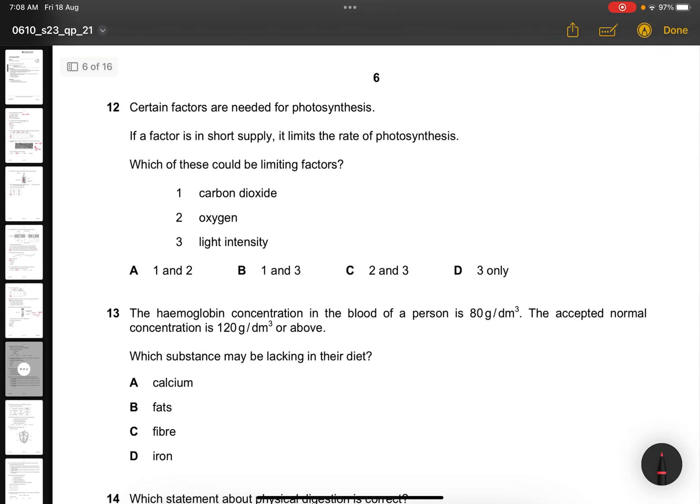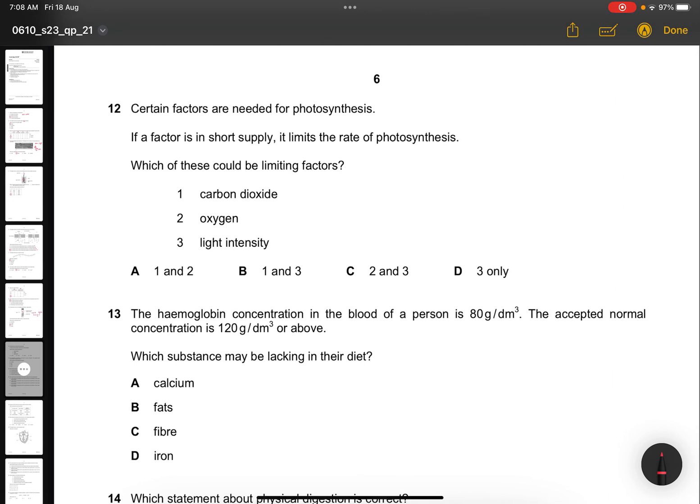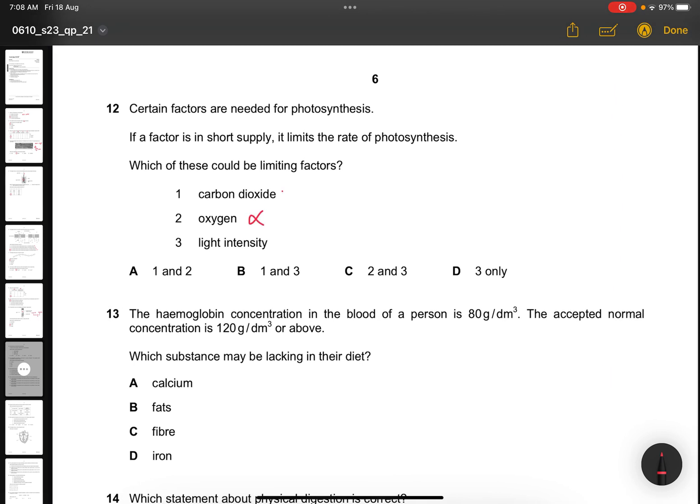Question 12. Certain factors are needed for photosynthesis. If a factor is in short supply, it limits the rate of photosynthesis. Which of these could be limiting factors? Oxygen will never be a limiting factor. It will be carbon dioxide and light intensity. So the answer is B.